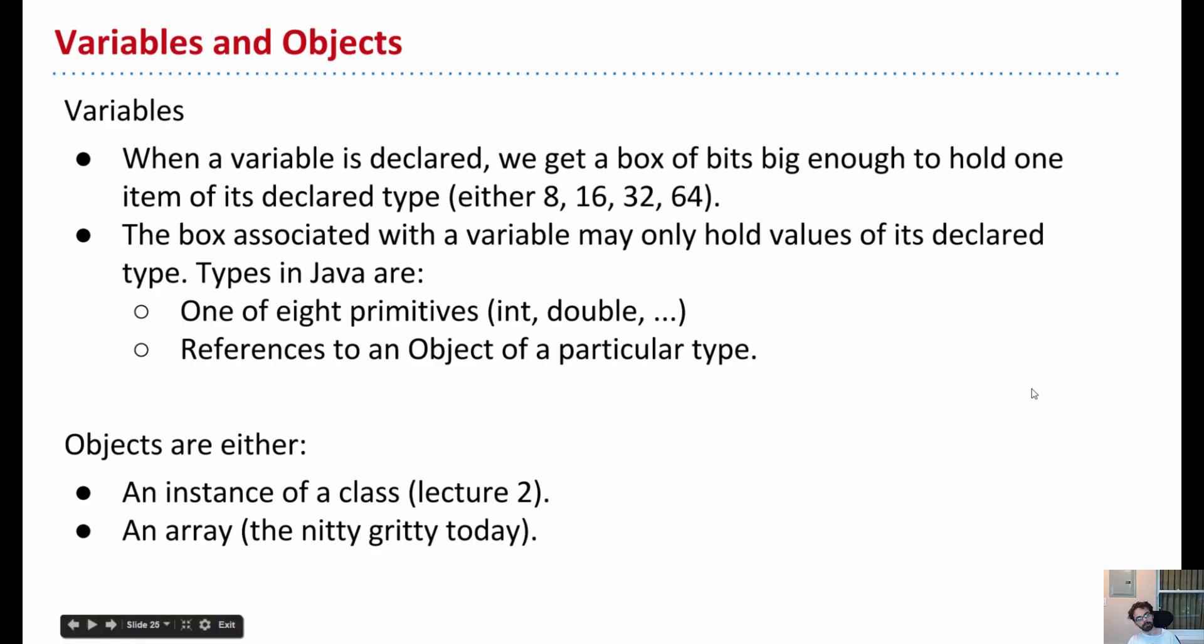So what is an array? Well, before we get there, I want to remind you what a variable is and talk about how everything is really just bits. When we declare a variable in Java, we get a box of bits that can hold one item of that type. For example, if we have a double variable, we declare double x, then we get 64 bits, and we name that box x.